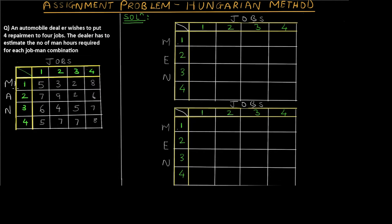The first column represents different persons — person one, person two, and so forth. The values in the table, such as 5, 3, 2, 8, represent the number of hours required for each person-job combination. For example, 5 is the hours required for person one to complete job one, and 3 is the hours required for person one to complete job two.